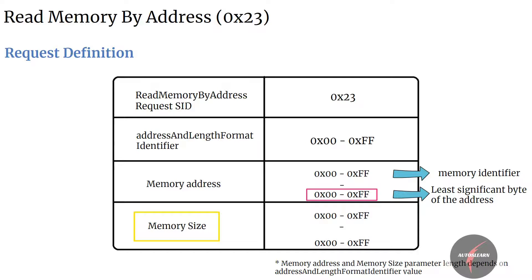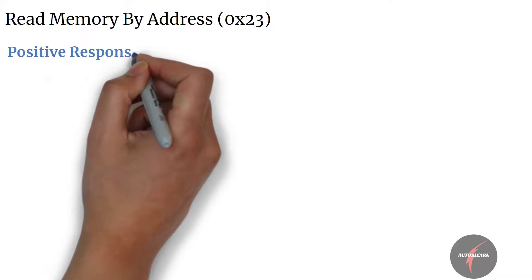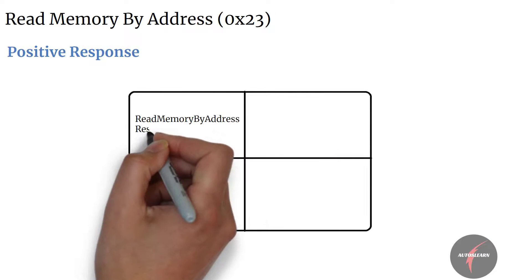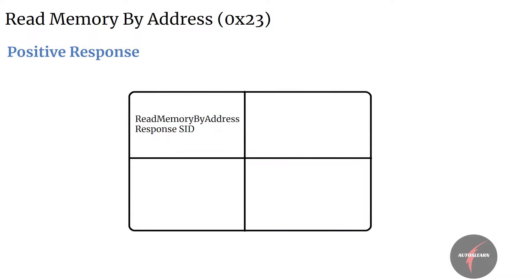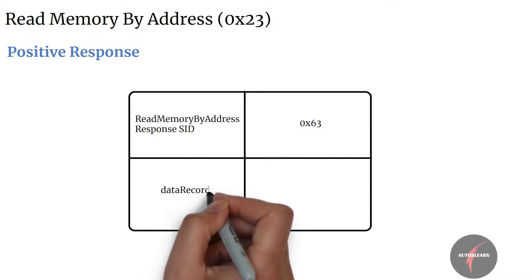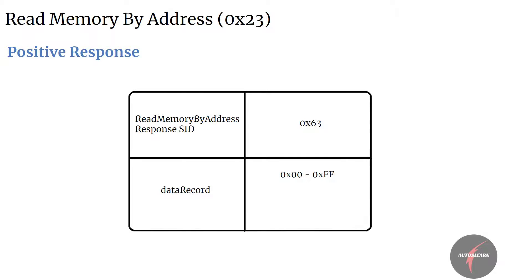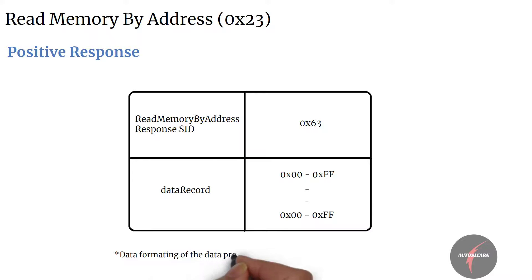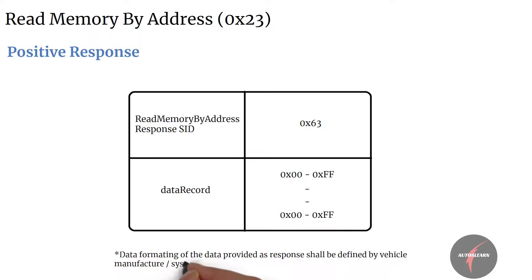Let's now look into the positive response. The positive response contains the Read Memory by Address response SID, that's 0x63, followed by the data record requested by the Read Memory by Address request. Data formatting of the data provided in the response shall be defined by the vehicle manufacturer or system supplier.